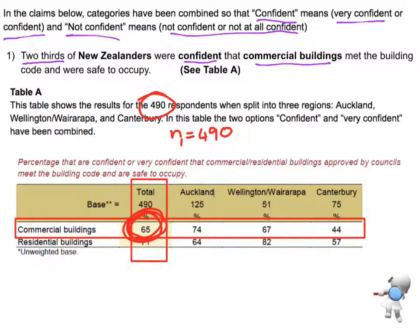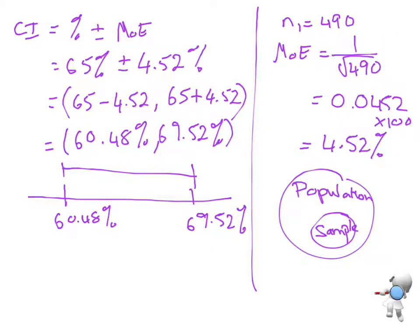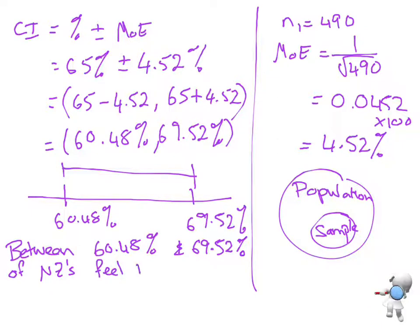So I'm going to go back to the wording of the question. And the question said, two-thirds of New Zealanders were confident that commercial buildings met the building code and were safe to occupy. So I'm going to interpret this and say between 60.48% and 69.52% of New Zealanders feel that, and what was it,